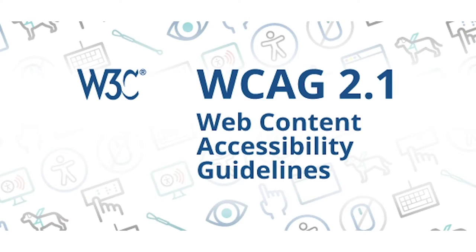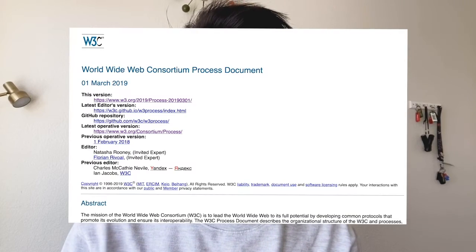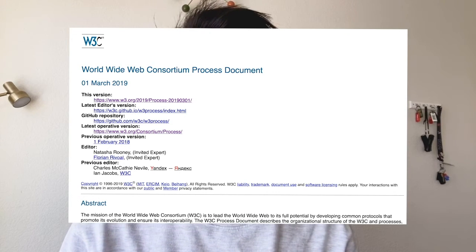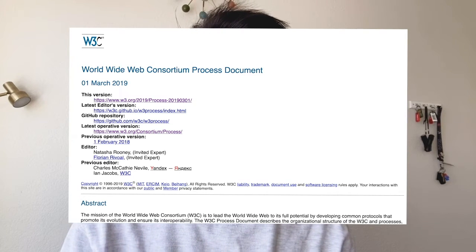What's WCAG? The WCAG documentation explains how to make web content more accessible to people with disabilities. Web Content Accessibility Guidelines, or WCAG, is developed through the W3C process in cooperation with individuals and organizations around the world, with a goal of providing a single shared standard for web content accessibility that meets the needs of individuals, organizations, and governments internationally.